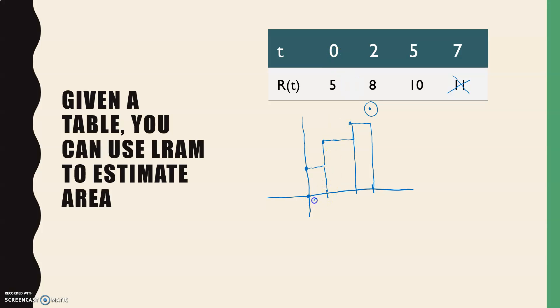So I'm not going to use the 11 because that would be the right side of that rectangle. And so my first rectangle has a width of 2 and a height of 5. My next rectangle has a width of 3 and a height of 8. And my last rectangle has a width of 2 and a height of 10. So using LRAM, I would have an area of 54. And since this is a rate function of some sort, then my amount would be 54.